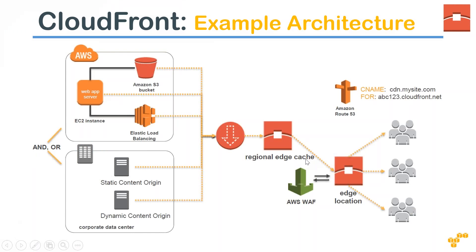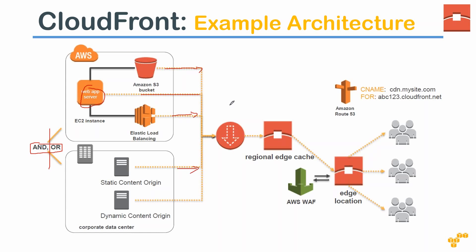Here is a simple architecture of how CloudFront looks. On the left-hand side, one box shows resources residing in AWS, and the bottom box shows content residing in an on-premise data center. You can configure CloudFront with both or either. Multiple origins are supported — you can pick up content directly from EC2, from an S3 bucket, from an ELB, or from a custom origin on-premise.